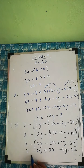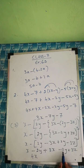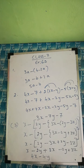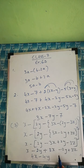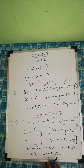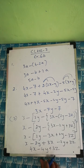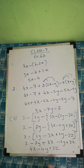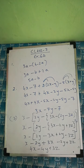Now collecting like terms: x plus 3x is 4x, minus 2y minus 2y is minus 4y, and only one 3z so we just write 3z. Final answer: 4x minus 4y plus 3z. Question 3 is done.